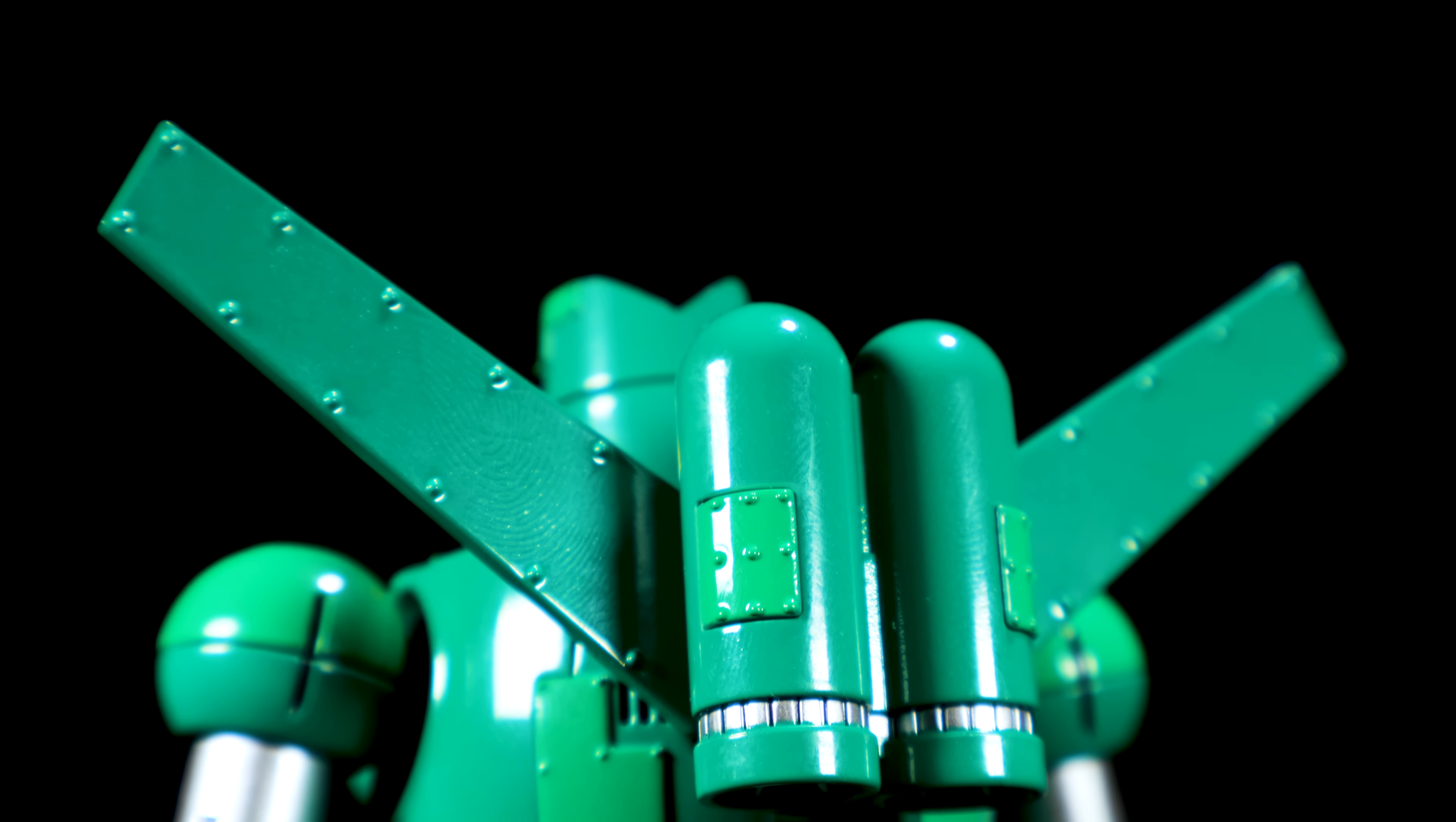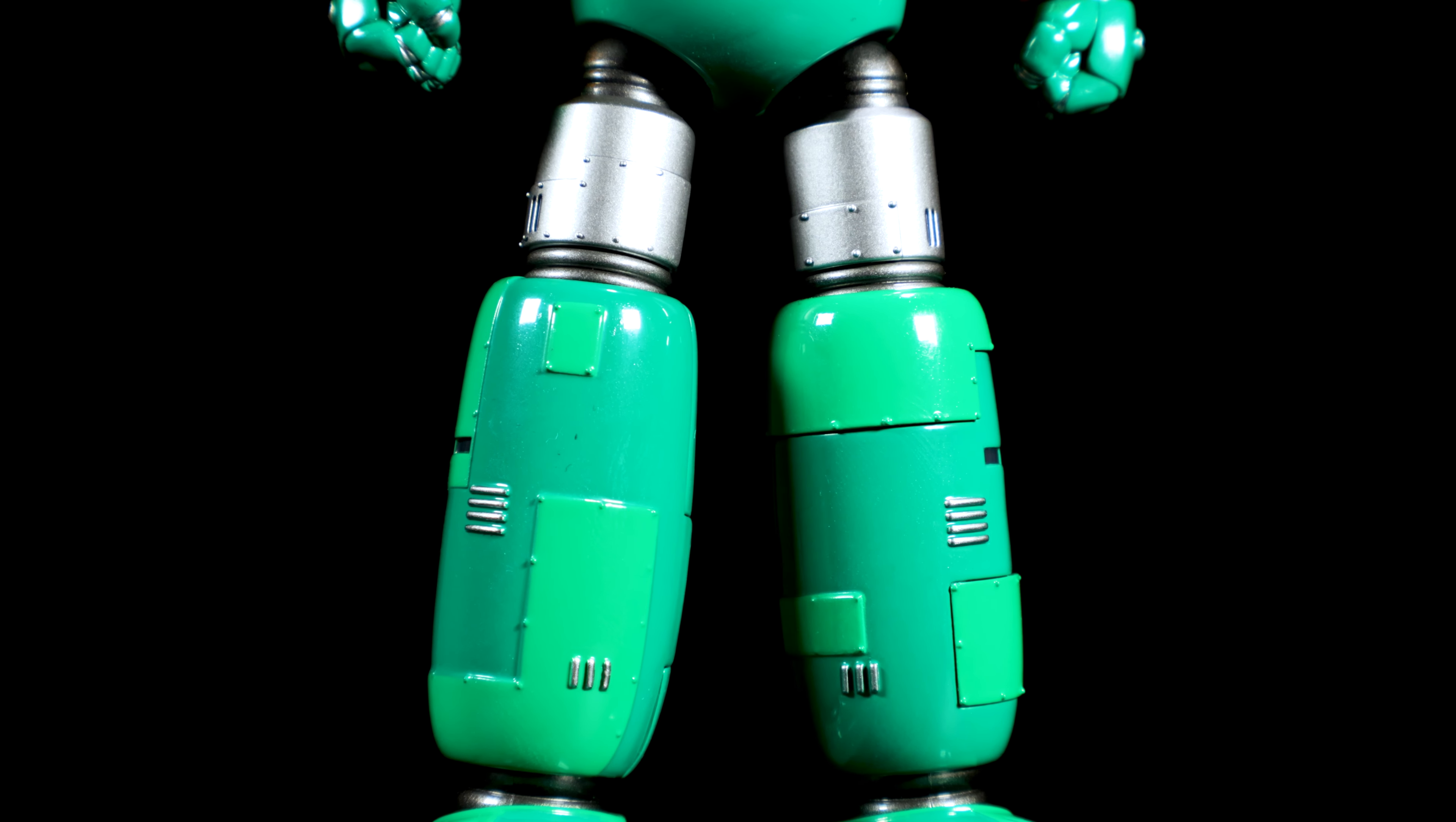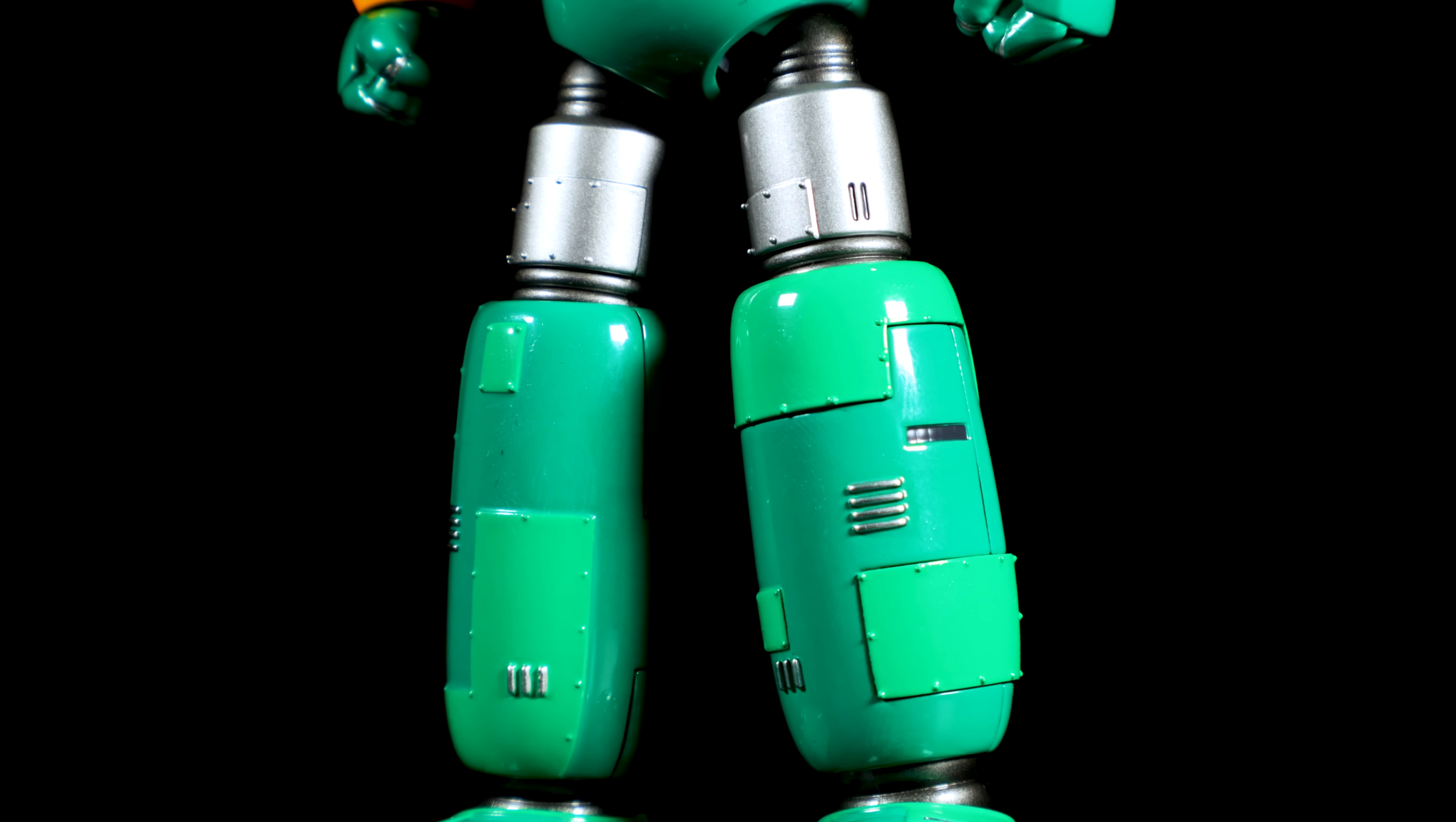The jetpack has an angular sculpt with rivets on the wings, two-tone panels on the thrusters and metallic silver accents. The legs have a nice robotic sculpt with various panels, accents and rivets. I really like all the variation here in the sculpt and panels on this figure.